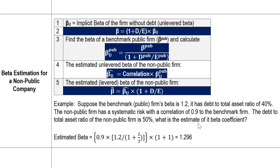The result of 1.3 is much higher than the naive estimate because the two firms have different debt-to-equity ratios and different capital structures. The beta coefficient is very sensitive to the capital structure and debt ratio. So the next time you see a question about estimating beta for a non-public firm, please be careful — you must perform this debt ratio adjustment.